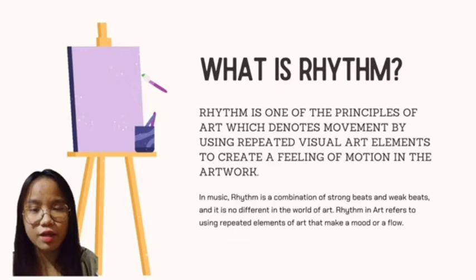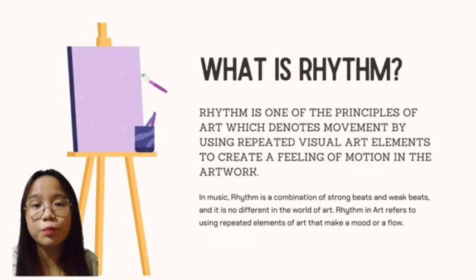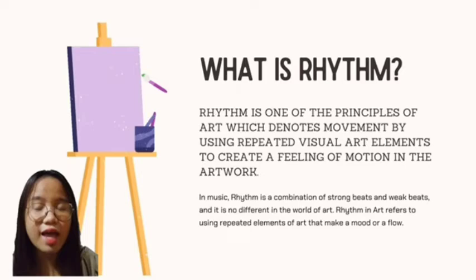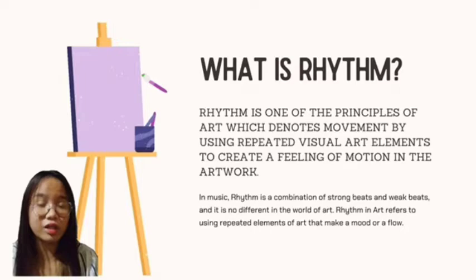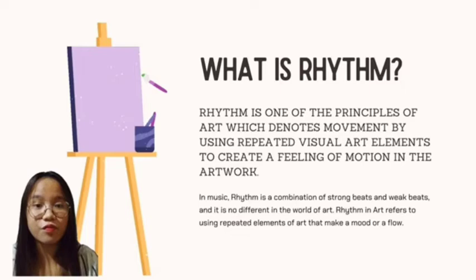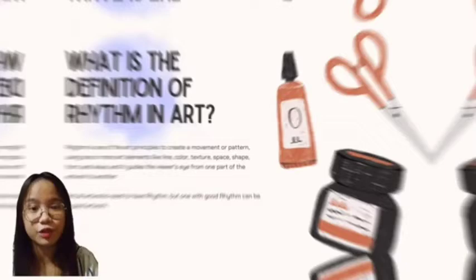Let's proceed to one principle of art, which is rhythm. Rhythm is one of the principles of art which denotes movement by using repeated visual art elements to create a feeling of motion in the artwork. Unlike the other principles, rhythm is a principle of art to be felt and understood and it is a bit complex to explain. In music, rhythm is a combination of strong beats and weak beats, and it is no different in the world of art. Rhythm in art refers to using repeated elements of art to make a mood or a flow of a specific artwork.